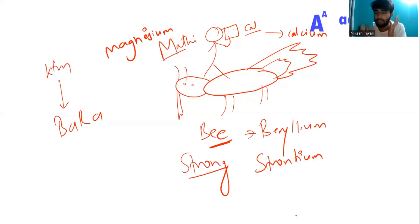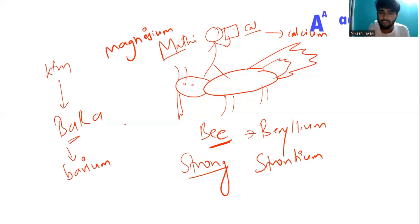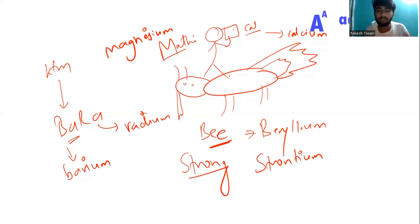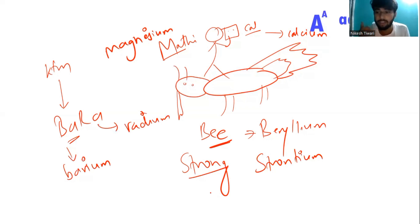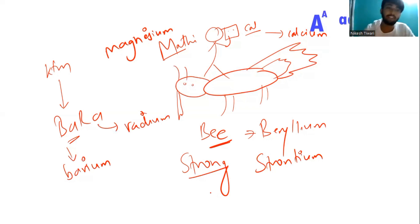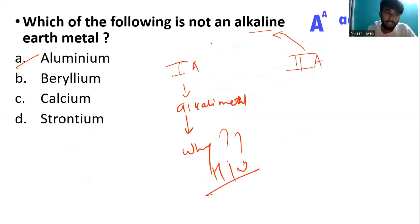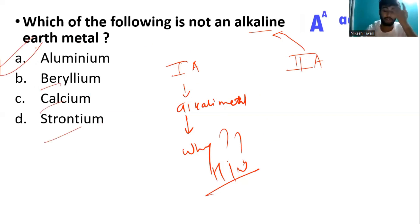Ba for barium, Ra for radium — radium is a radioactive element discovered by Madame Curie. So the correct answer is exactly that.